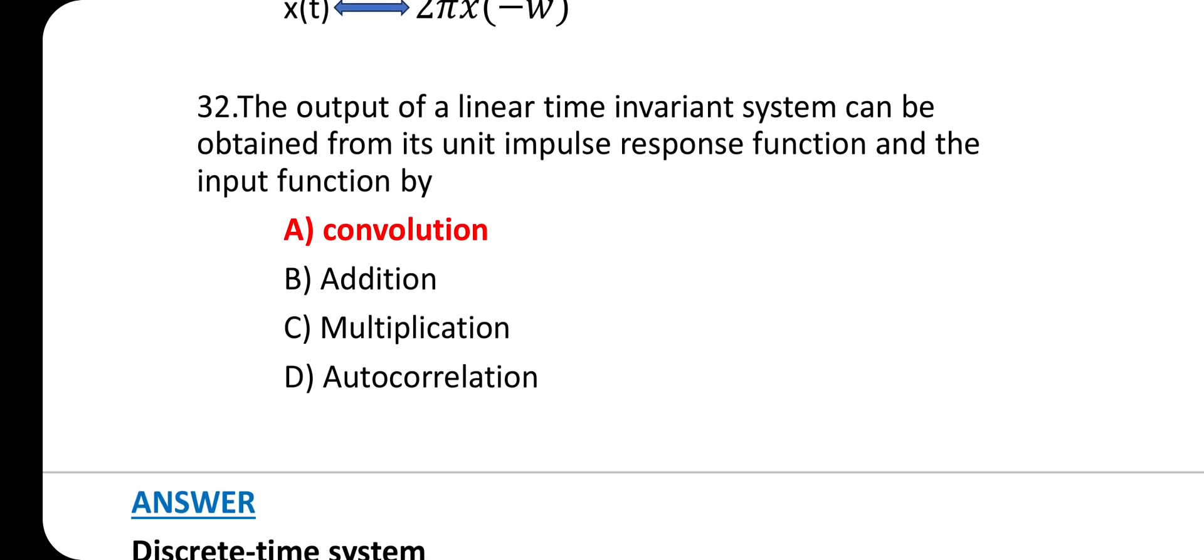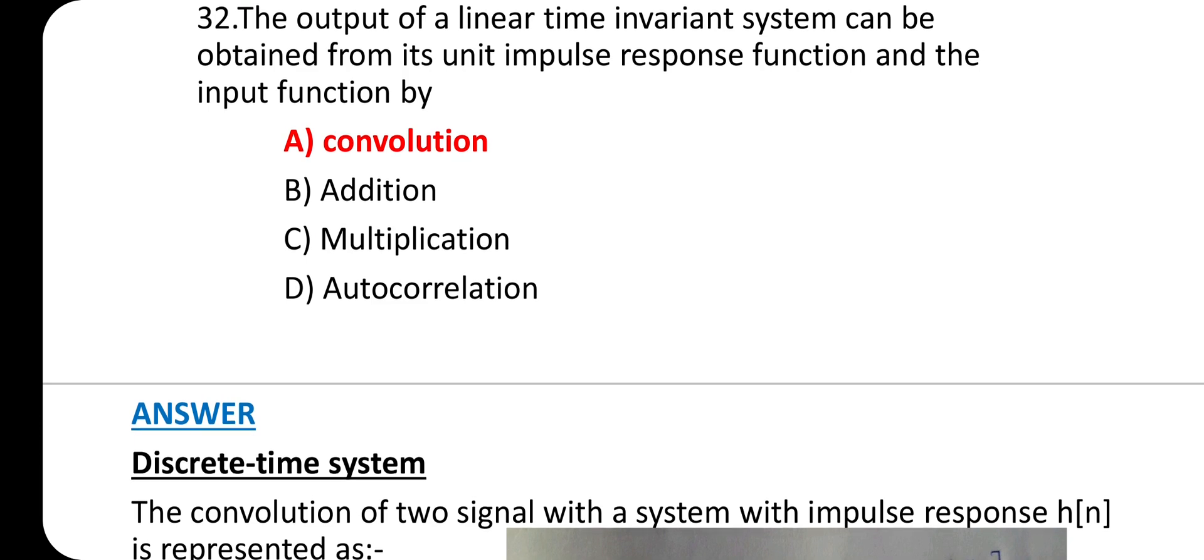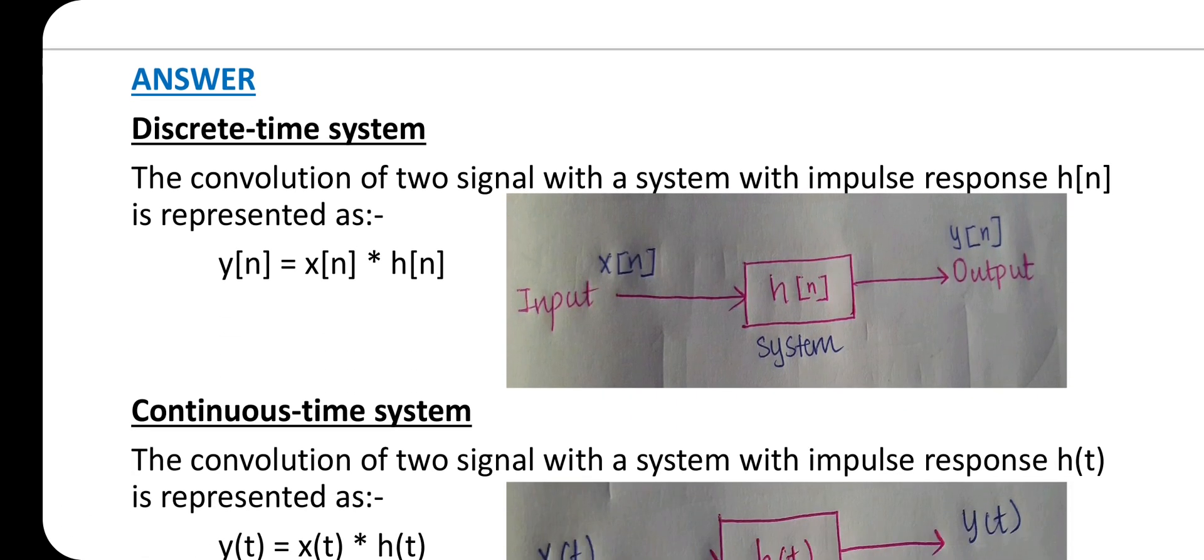Question 32: The output of a linear time-invariant system can be obtained from its unit impulse response function and the input function by option A: convolution.